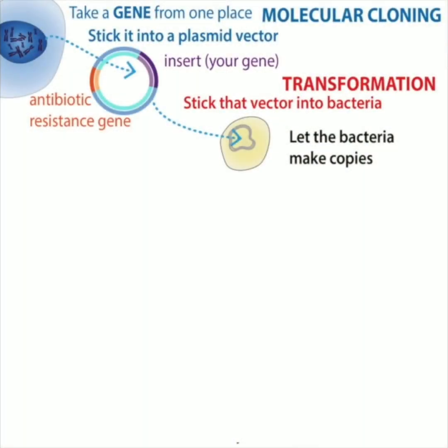We use harmless forms of bacteria a lot in the lab because they're really useful for holding, copying, and working with pieces of DNA that contain genetic instructions for things that we want to study, like various proteins. To make sure that we are only working with the bacteria that we intend to be working with — the bacteria that have the gene of our interest in them — we use antibiotic selection.